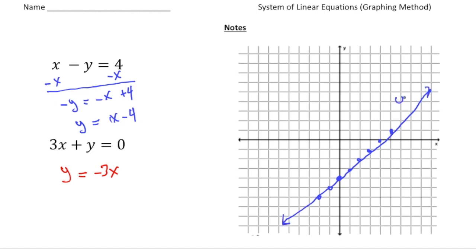That graph is x minus y equals 4. Now I'm going to graph y equals negative 3x in red. This one is going to have a y-intercept at the origin, and the slope is negative 3 — so down 3 over 1, down 3 over 1. Also going up 3 and left 1.